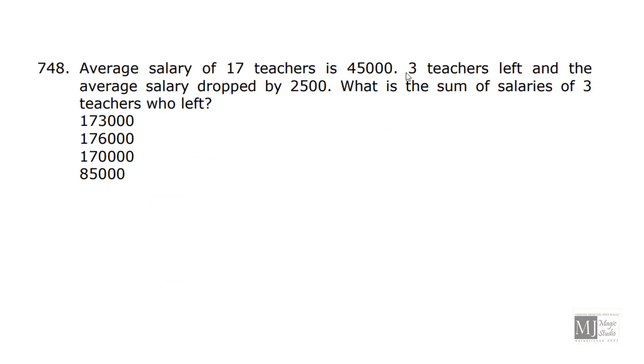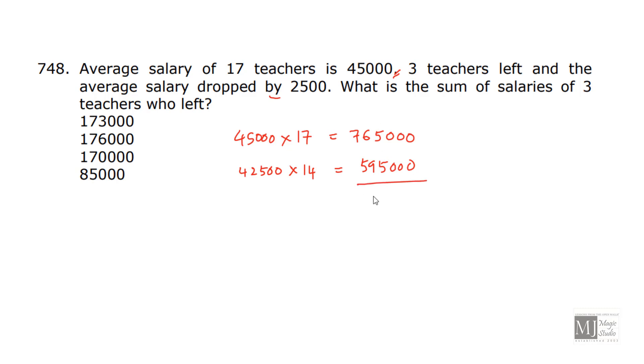Average salary of 17 teachers is 45,000. That means total salary of 17 teachers is 45,000 × 17. 45 × 17 would be 765,000. Now, 3 teachers left and the average salary dropped by 2,500. That means average salary now becomes 42,500. Now, we see that since 3 teachers have left, new average is 42,500. That is the average of 14 people only. So, the new total is 42,500 × 14. That is 595,000. So, if I subtract these two, I will get the salaries of 3 teachers who have left. So, that would be 170,000.